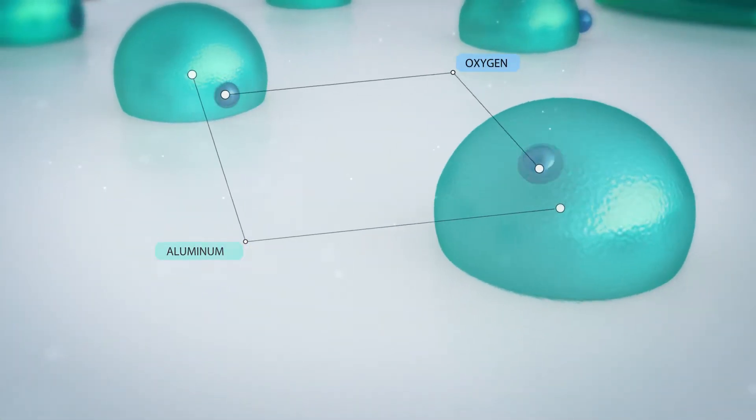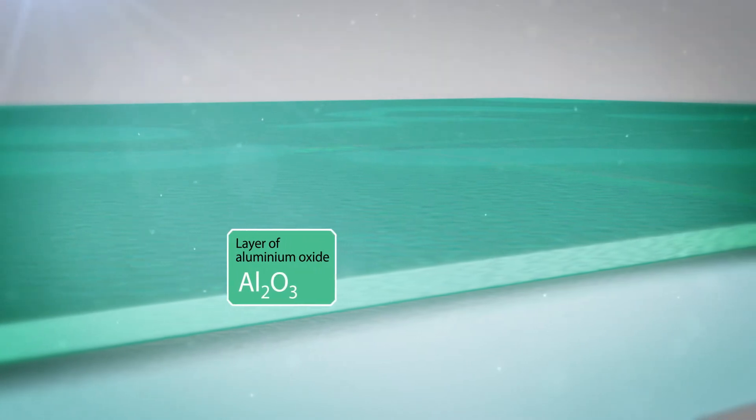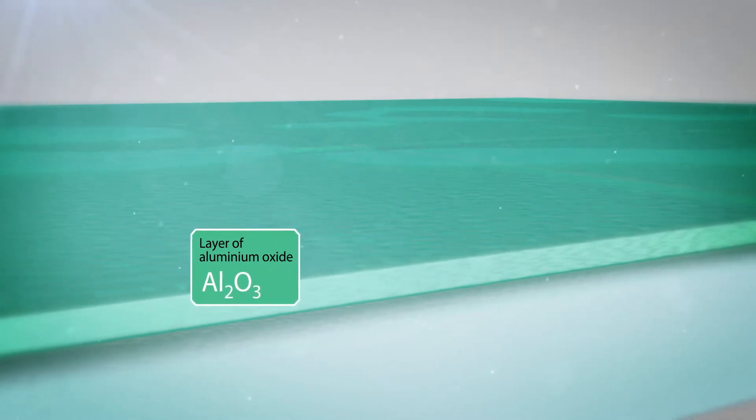When the metal comes into contact with the atmosphere, it oxidizes, creating a uniform barrier on the surface of the film with a thickness of 50 to 100 nanometers.